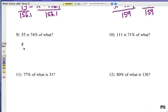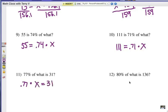Alright, number 9. 55 is 74, don't forget to change it to a decimal, times x. Or 111 is 71, .71, times x. And .77 times x equals 31. And .80, or I can leave the zero blank. I can drop that zero. Times x equals 136. That's how you translate it into an equation. Now let's solve.